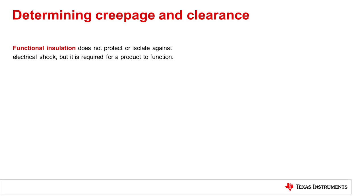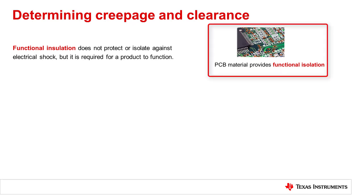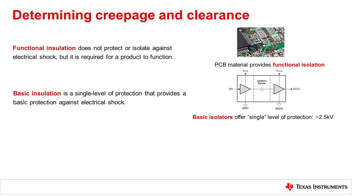Functional insulation does not protect or isolate against electrical shock, but it is required for a product to function. A good example may be the PCB material between metal traces on a board — the circuit would not function without separation of the traces, so this functional insulation is needed to operate. Basic insulation is a single level of protection that provides basic protection against electrical shock. A very common example would be the plastic insulation of an electrical cord, which is a single level of protection from AC voltages.